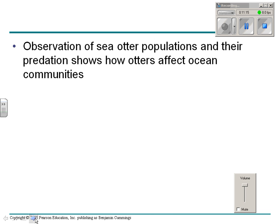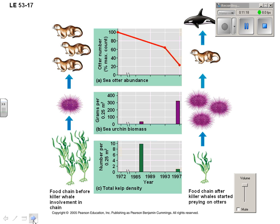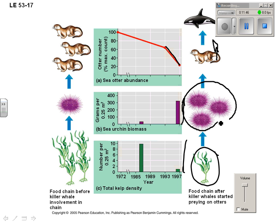Sea otter populations and their predation offer another example. Sea otters eat sea urchins, and sea urchins eat kelp. When killer whales came in and started eating the sea otters, the otter population went down, the urchin population exploded, and the kelp population dropped precipitously. So now you don't have your primary producer — the sea otter was a keystone species in the balance of that ecosystem.